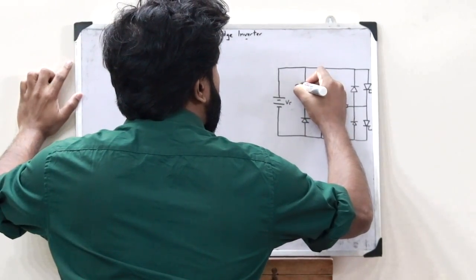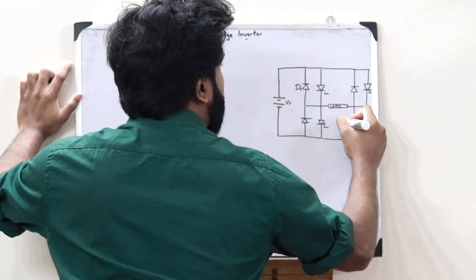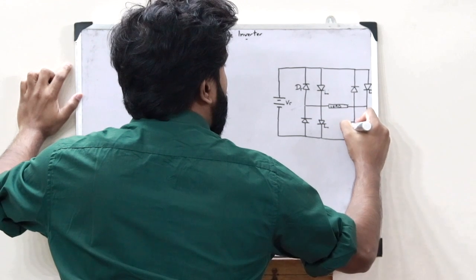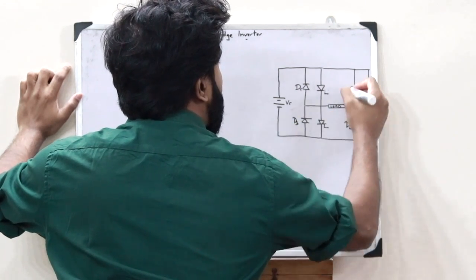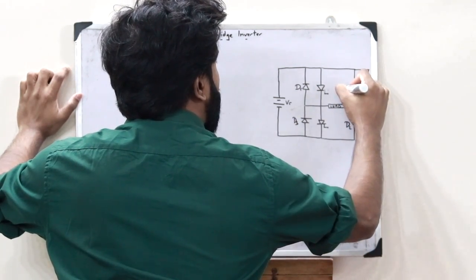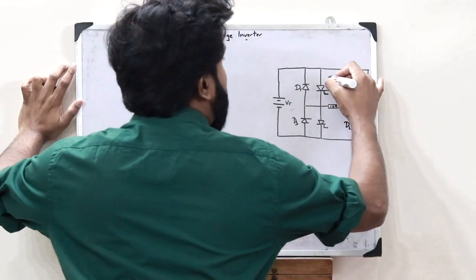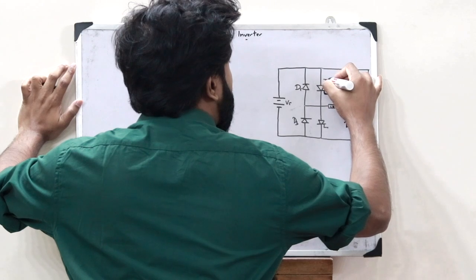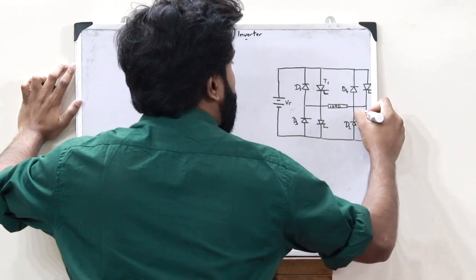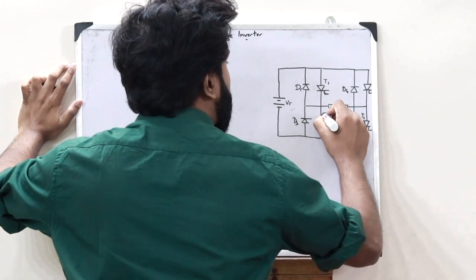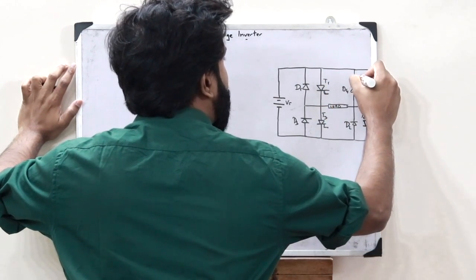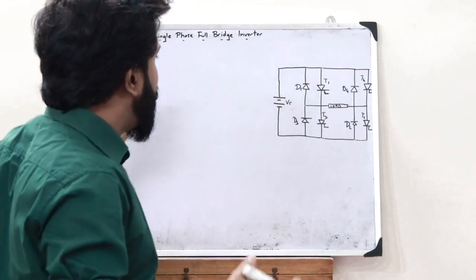Let this diode be D1, this be D2, this be D3, and this be D4. Let this SCR be T1, this be T2, this be T3, and this be T4.